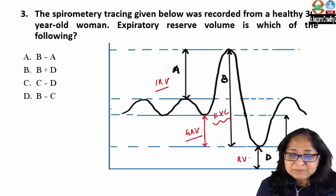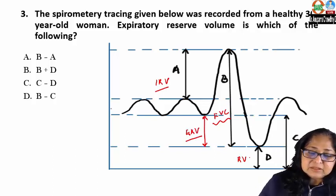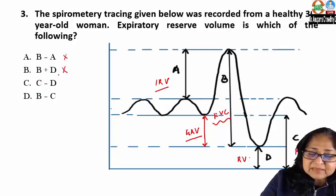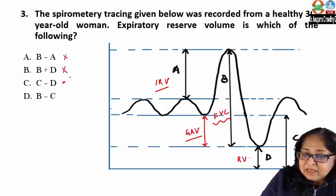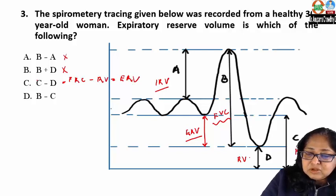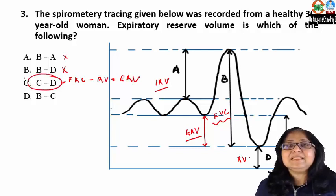So what is my best answer? B plus D is total lung capacity — no. C minus D is functional residual capacity minus residual volume, which equals expiratory reserve volume. So my answer here is C minus D.